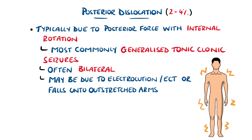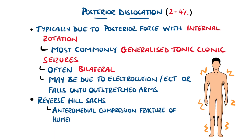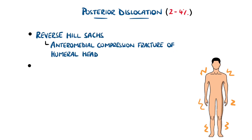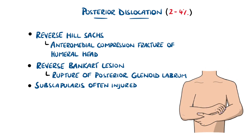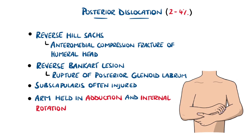Posterior dislocations can cause reverse Hill-Sachs lesions, where there is impaction on the anteromedial humeral head coming from compression against the posterior lip of the glenoid, which can cause reverse Bankart lesions — a rupture of the posterior glenoid labrum. There is also often a tear of the subscapularis muscle. The arm is typically held in internal rotation and adduction, with difficulty in external rotation in particular.